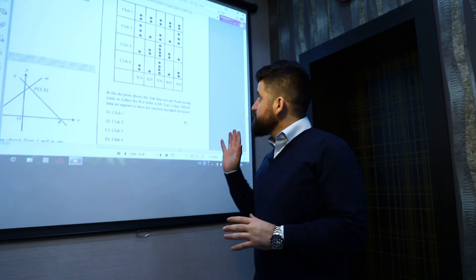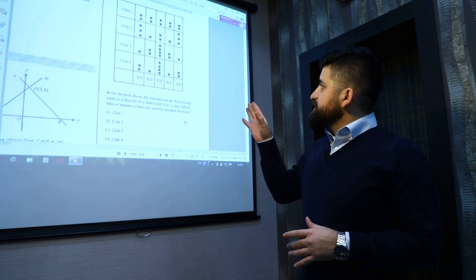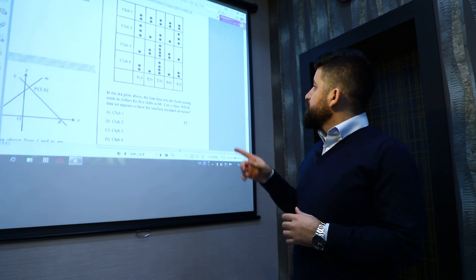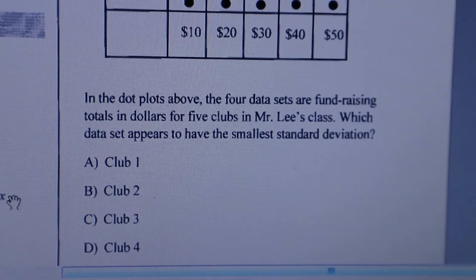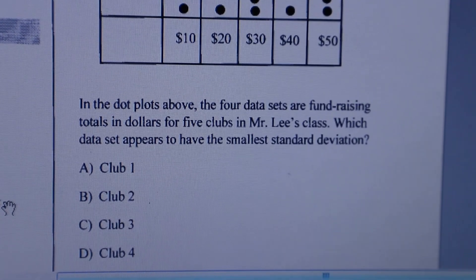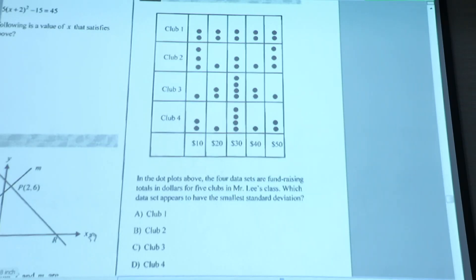Let's review this question which is related to standard deviation. In the dot plots above, the four data sets are fundraising totals in dollars for five clubs in a class. Which data set appears to have the smallest standard deviation?